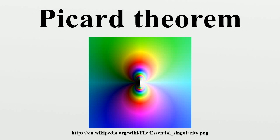The single exception is needed in both theorems, as demonstrated here. E^z is an entire non-constant function that is never zero. E^(1/z) has an essential singularity at zero, but still never attains zero as a value.